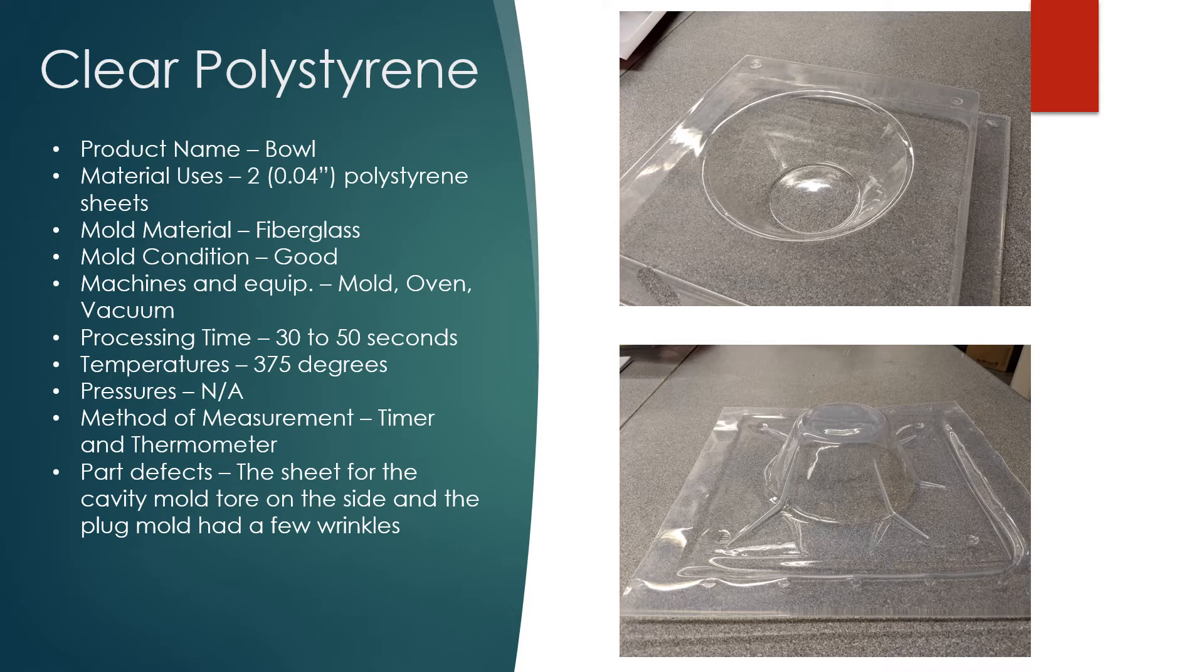The top picture is a cavity mold while the bottom picture is a plug mold. The mold material for both is fiberglass and both molds were in good shape. Machines and equipment used: the mold, the oven, and the vacuum, which is a part of the oven.